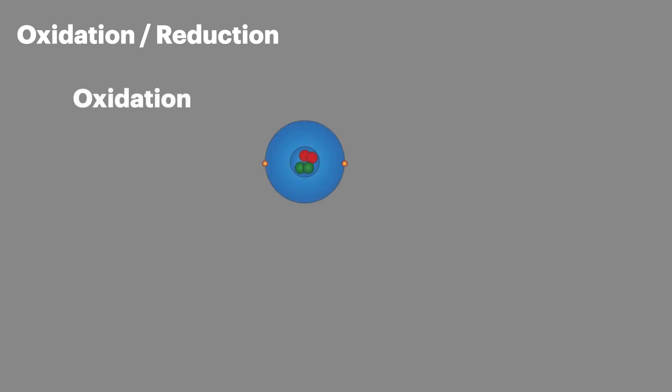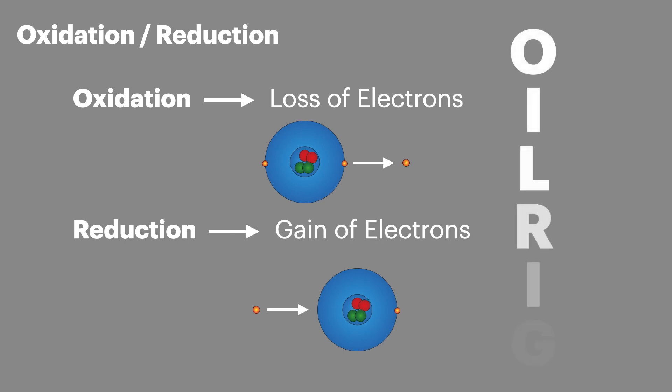So oxidation is where an atom loses electrons and reduction is where an atom gains electrons. This is often remembered as oil rig. Oxidation is loss, reduction is gain.